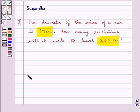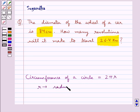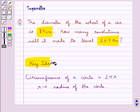First, let's recall the formula for the circumference of a circle. This is equal to 2πr, where r is the radius of the circle. This is the key idea that we use in this question.